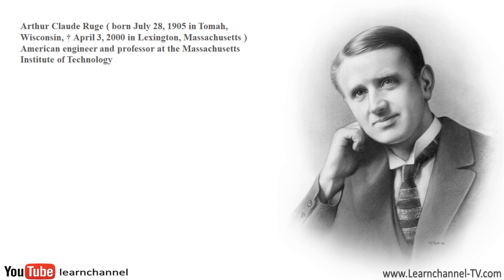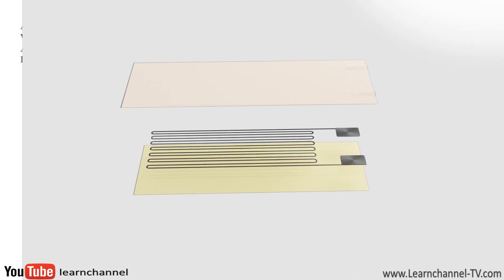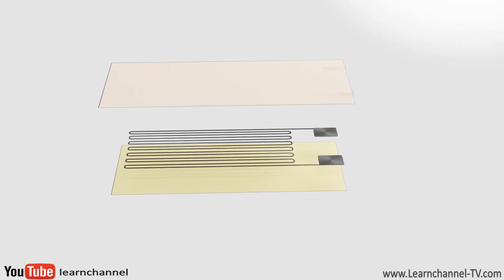We should mention that around the same time, but independently of Rougie, Edward E. Simmons also invented this strain gauge, but it was actually Rougie who brought the strain gauges to mass production, triumphantly introducing the device over the previously conventional strain gauges.